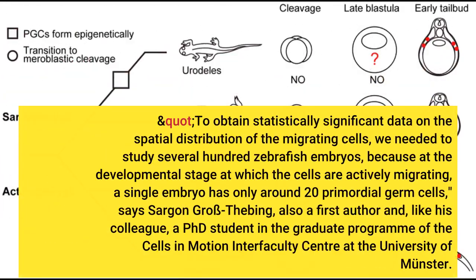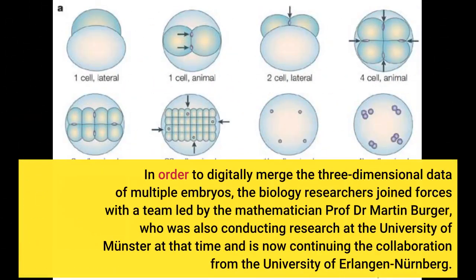To obtain statistically significant data on the spatial distribution of the migrating cells, we needed to study several hundred zebrafish embryos, because at the developmental stage at which the cells are actively migrating, a single embryo has only around 20 primordial germ cells, says Sargon G. In order to digitally merge the three-dimensional data of multiple embryos, the biology researchers joined forces with a team of mathematicians.